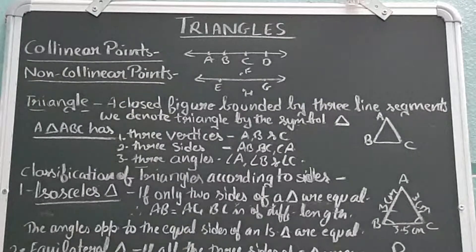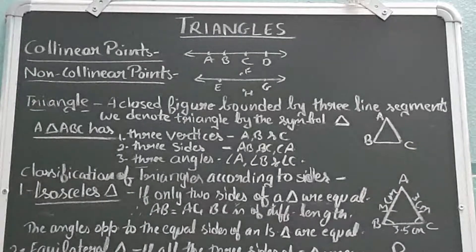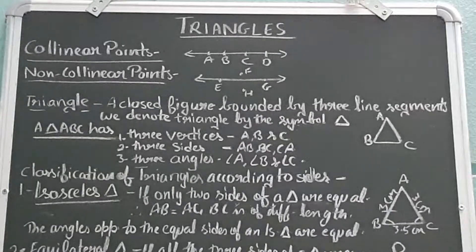The figure shown is triangle ABC. This triangle has three vertices: A, B and C. A triangle has three sides: AB, BC and CA. It also has three angles: angle A, angle B and angle C.